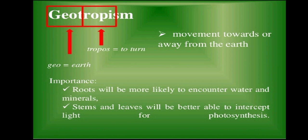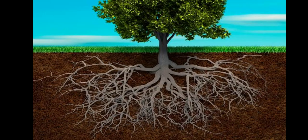Next, geotropism. Geo means earth — the movement of a plant part towards the earth is called geotropism. If the root is growing towards the soil, it is positive geotropism. The shoot part growing away from the soil is negative geotropism. The root growing towards the soil denotes positive geotropism.